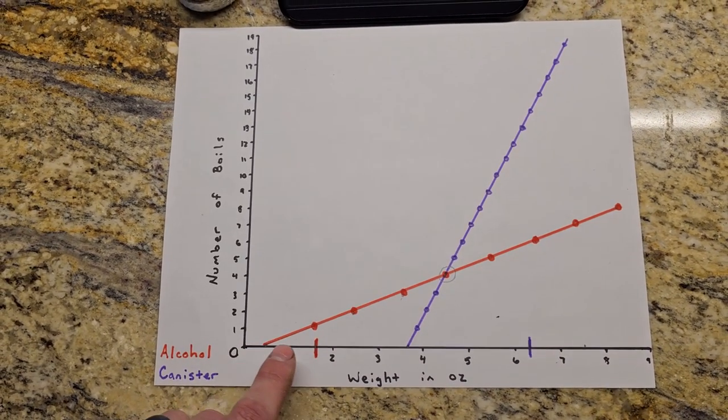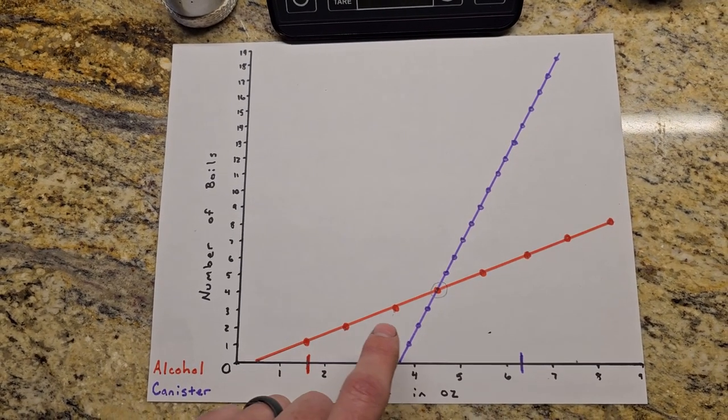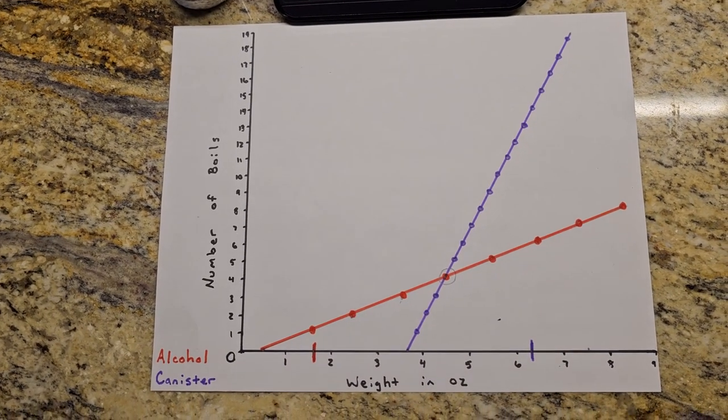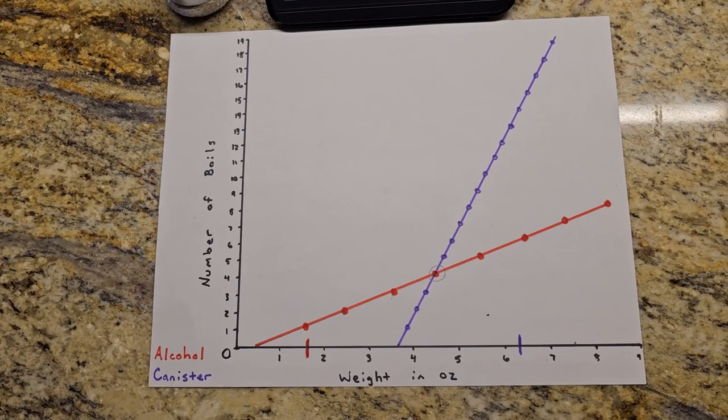Also as we get our boils out of these, obviously the weight is going to go way down. So we're going to be losing weight faster off of our alcohol setup than we would off of our canister fuel stove setup.